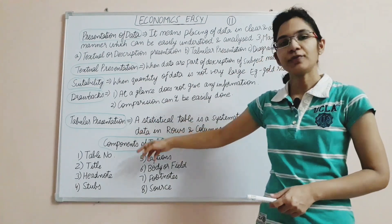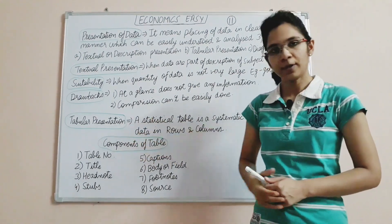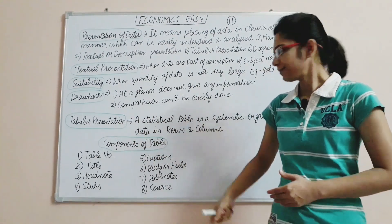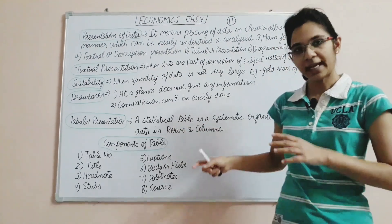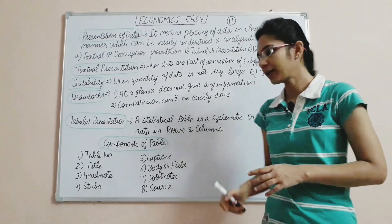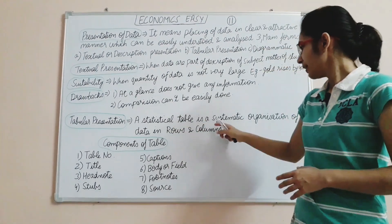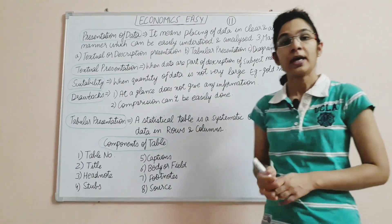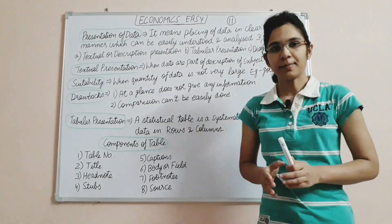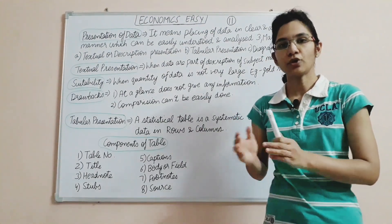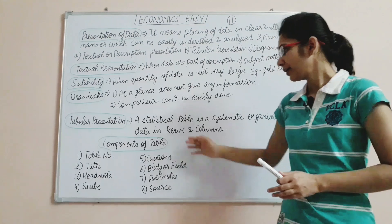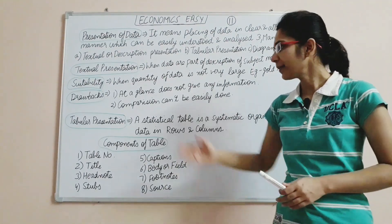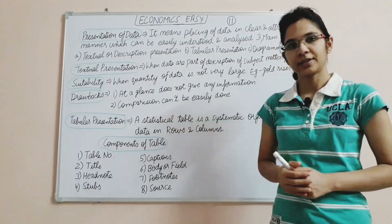The second form of data is tabular presentation. A statistical table is a systematic organization of data in rows and columns. When we divide and present data systematically in rows and columns, it is called tabular presentation.